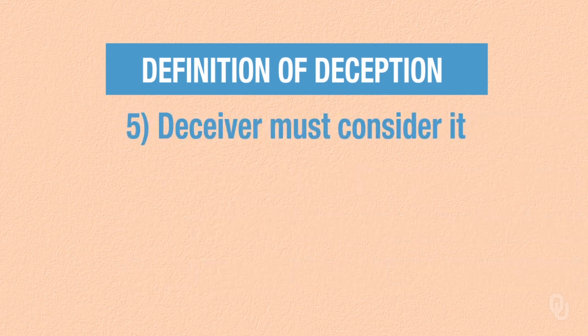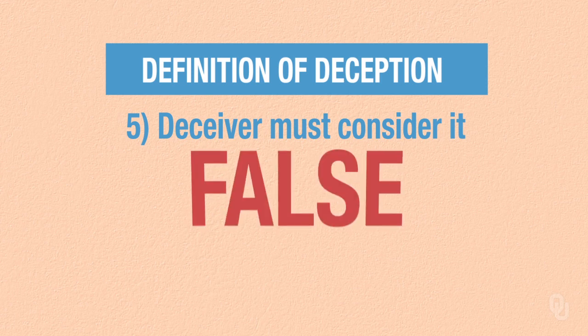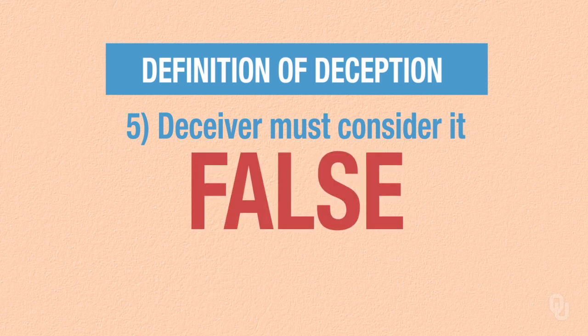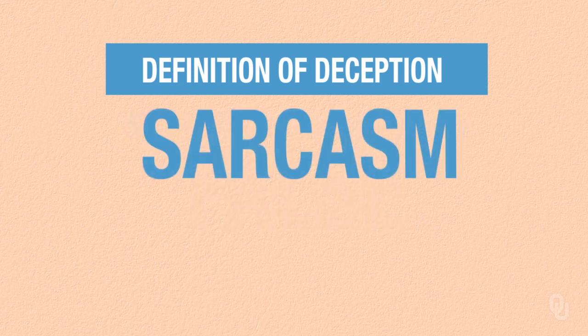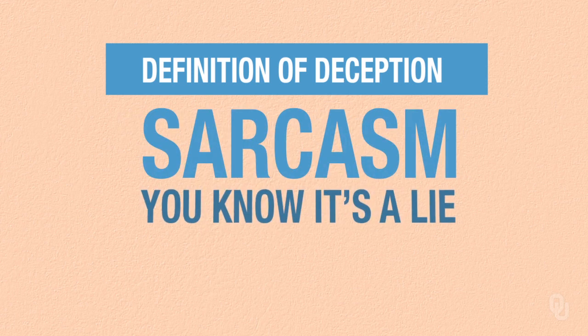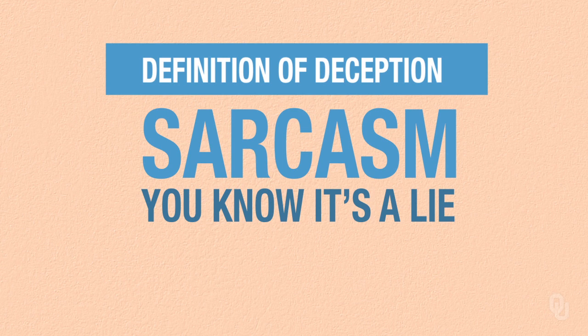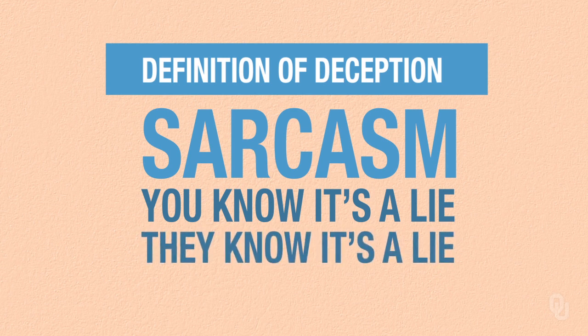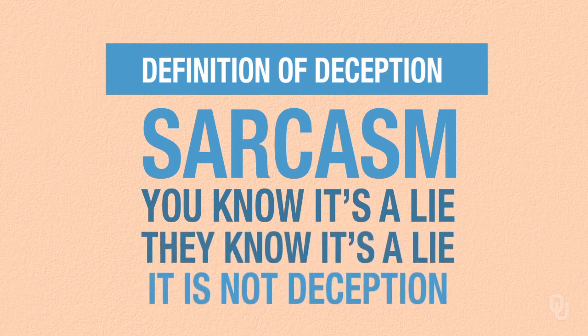The fifth aspect of the definition is that the deceiver must consider it to be false. Consider the case of sarcasm. If you say something that you know is a lie, and the receiver knows it's a lie too, then that really wouldn't fall into the definition of deception.